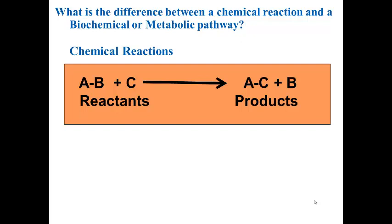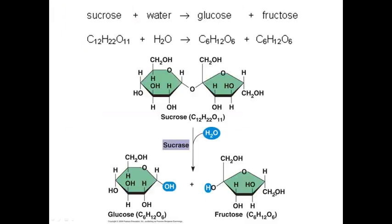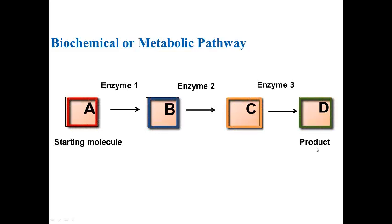To review: a chemical reaction is one reaction with a set of reactants, or starting materials, that leads to products. In our example, sucrose plus water goes to glucose and fructose, and sucrase facilitated this reaction. Metabolic pathways are different — they are a series of chemical reactions in which the product of one reaction is the substrate, or reactant, for the next reaction. Each step will have a separate and unique enzyme that facilitates that particular part of the pathway.